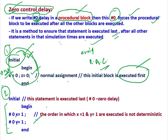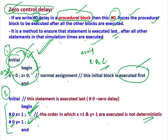So when control comes to this initial block, the order in which x equal to one and y equal to one are executed is not deterministic. Because both statements here are preceded by #0, there is no certainty whether this line will be executed first or the other line will be executed first — it is decided by the simulator. So it is not deterministic, meaning not defined. If this line is executed first, then x equal to one, then y equal to one.